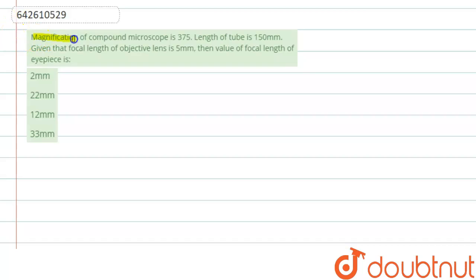Question says that magnification of compound microscope is 375, length of tube is 150 millimeter, given that focal length of objective lens is 5 millimeter, then value of focal length of eyepiece. So in this question we have to find out the focal length of eyepiece of a compound microscope. This is very simple question.